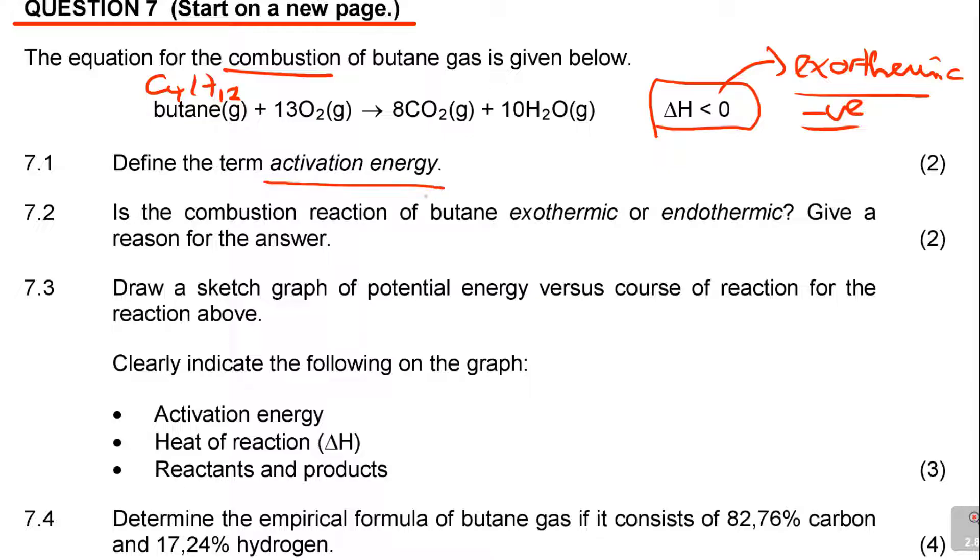Define the activation energy. When they start asking these definitions, it is very important for you to just get all the definitions together and master them, cram them. Just list everything in chemistry about definitions and get time to cram them. So what is the activation energy? The activation energy is the minimum energy needed for a reaction to take place. Repeat with me: it is the minimum energy needed or required for a reaction to take place.